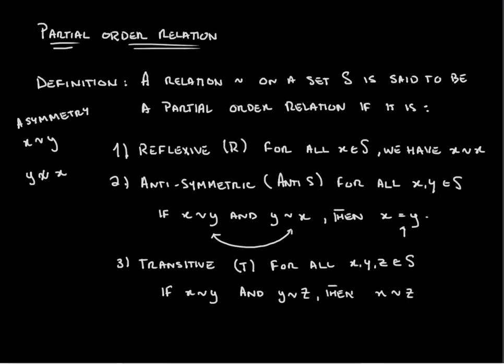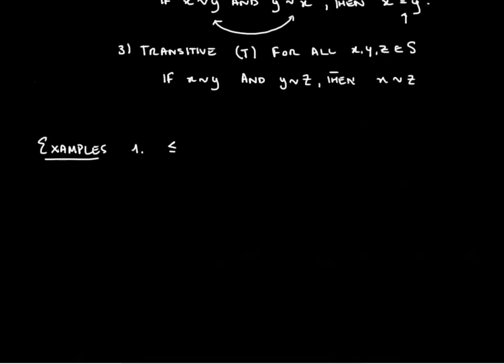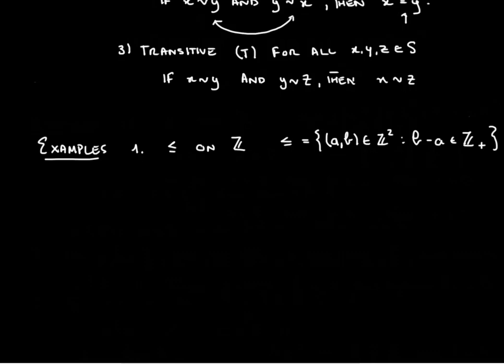So let's go over a few examples. In our first example, we'll go over the classic less or equal than, and we'll be using this relation on the set of integers. We can use the set of rationals, the set of real numbers. It doesn't really matter for our purpose. If you haven't encountered this definition, this relation is equal to all of the pairs a and b that are integers, such that the difference a minus b is a non-negative integer.